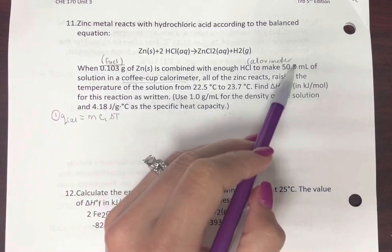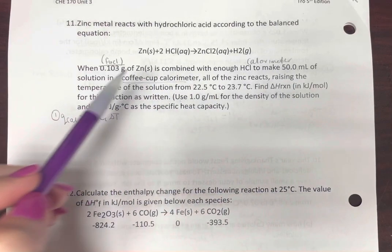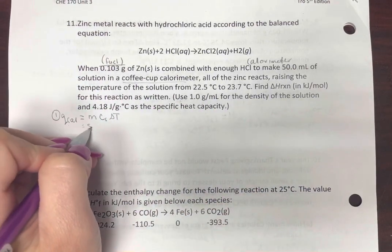Now, mass, but we have milliliters. Wait a minute. Milliliters? That's not good. Does it give us a density? Yes. So 50 milliliters is going to be the same as 50 grams.